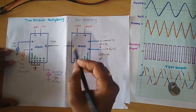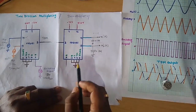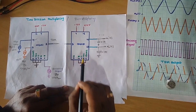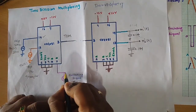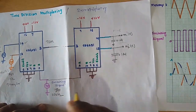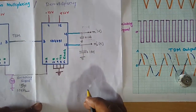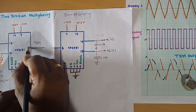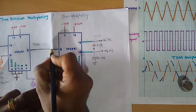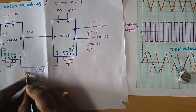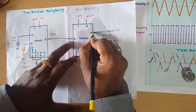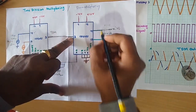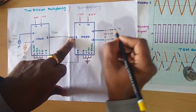To demultiplex the TDM signal, we again use IC CD4051, configured as a demultiplexer. Pin number 11 acts as the selection line. The same switching signal used at the multiplexing side must be connected to the demultiplexer as well, so that the original message signals can be reconstructed. The TDM output from pin number 3 acts as input at the demultiplexer side and must be connected to pin number 3. Whenever the switching signal is positive, pin number 3 connects to output channel 14, containing a sample of the sine wave, which can be reconstructed with a capacitor across pin number 14.